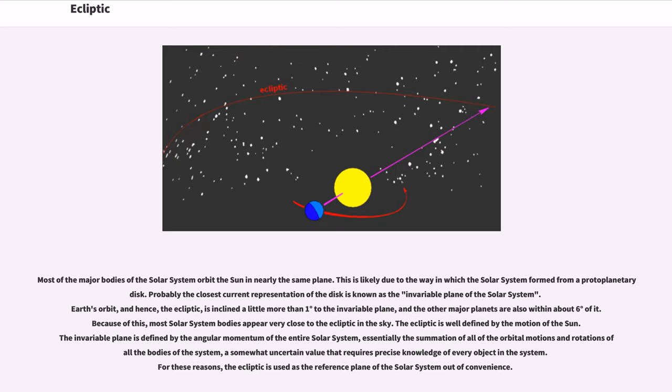The ecliptic is well defined by the motion of the Sun. The invariable plane is defined by the angular momentum of the entire solar system, essentially the summation of all of the orbital motions and rotations of all the bodies of the system, a somewhat uncertain value that requires precise knowledge of every object in the system. For these reasons, the ecliptic is used as the reference plane of the solar system out of convenience.